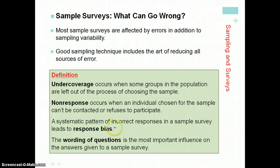Response bias involves incorrect responses. For example, if you ask someone their exact income, they likely don't know it and will estimate, which could be much higher or lower than reality. Or if you ask how many times in the last month they ate breakfast, that taxes their memory and they'll just guess. It would be better to ask how many times they ate breakfast in the past three days — they can remember that.